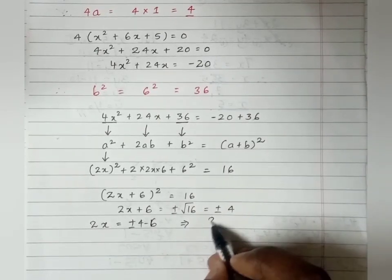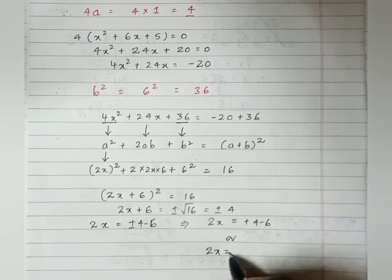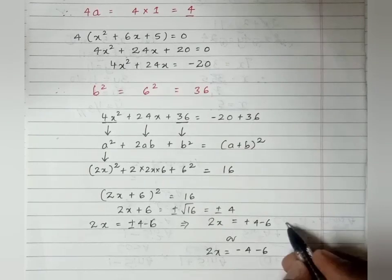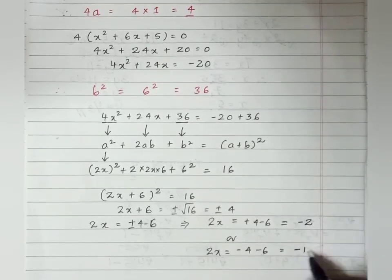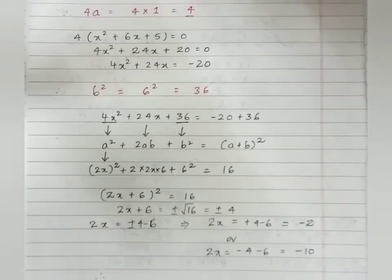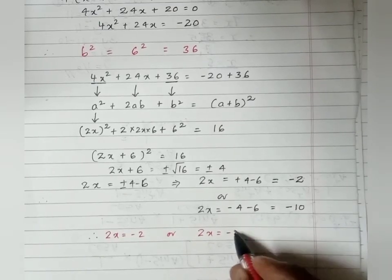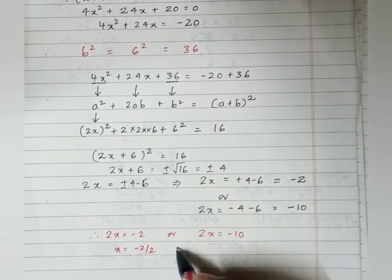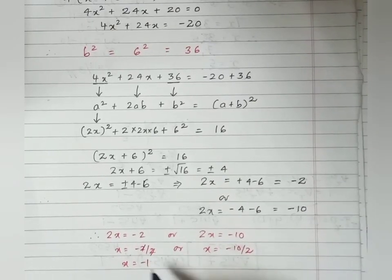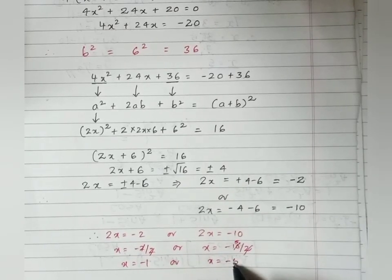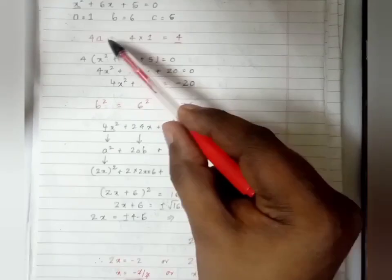So 2x = +4 - 6 = -2, or 2x = -4 - 6 = -10. Therefore x = -2/2 = -1, or x = -10/2 = -5. These are the roots of the quadratic equation by the completing the square method.